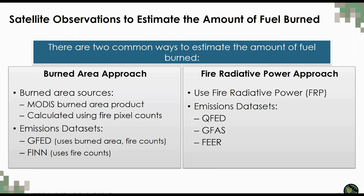There are two primary ways that groups estimate the amount of fuel burned. One is through the burned area approach, using observations of burned area such as the MODIS burned area product, or making assumptions about burned area based on the location of an active fire. Examples include GFED and FIN. The second uses the observed thermal energy of a fire — FRP. Examples of these emissions datasets include QFED, GFAS, and FEAR. We'll cover QFED and GFAS in more detail.